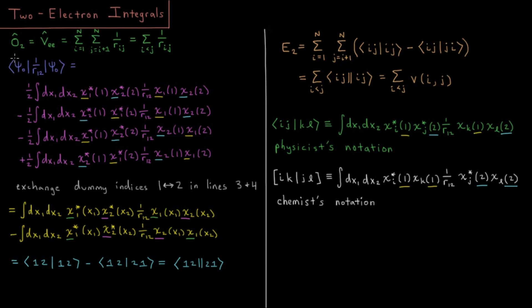Following up on the one electron operators from the previous video, we now have two electron operators. I noted there are only the electron-electron repulsion that is going to be a two-electron operator. So that's going to be a pairwise sum, sum i equals one to n, sum j equals i plus one to n of the one over rij operator, the inverse distance of the electrons from one another. Or we might more succinctly express it as sum i less than j, one over rij.